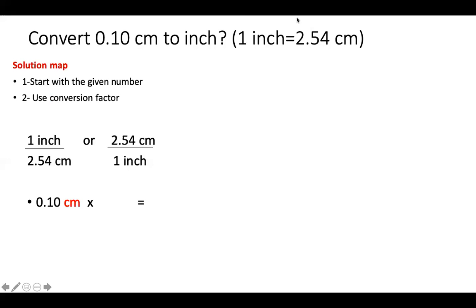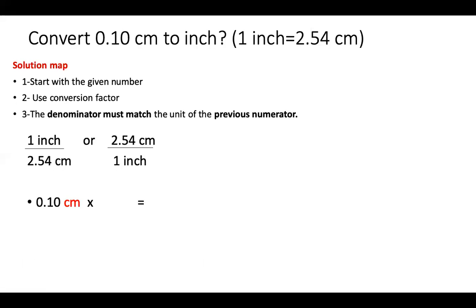I'm going to write the given number down. The second step is using the conversion factor, which is given in the question. You write it with one on top of the other and flip it one more time: so either one inch divided by 2.54 centimeter, or 2.54 centimeter over one inch. Now we decide which one to use. I use the left one because the unit in the denominator is centimeter, matching the previous numerator, so they can cancel out.